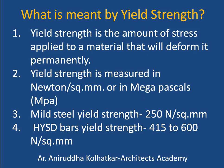Yield strength is measured in newtons per square millimeter or in megapascals. For comparison, mild steel has a yield strength of 250 N/mm², while HYSD bars have yield strengths ranging from 415 to 600 N/mm². This shows that HYSD bars are much stronger than mild steel bars and are therefore preferred for use in reinforced concrete work.